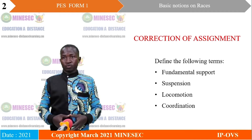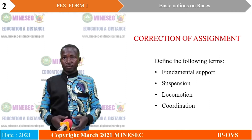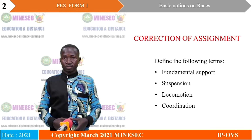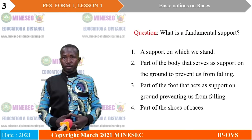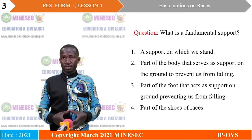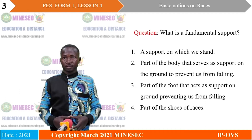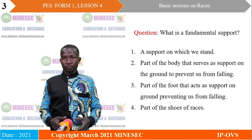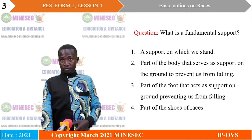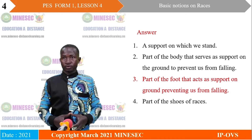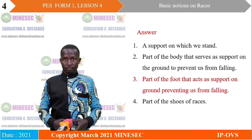First, we are going to define the following terms: fundamental support, suspension, locomotion, and coordination. For the first question — what is a fundamental support? — the proposed answers were: a support on which we stand; part of the body that serves as support on the ground to prevent us from falling; and part of the foot that acts as support on the ground preventing us from falling. The right answer is: part of the foot that acts as support on the ground preventing us from falling.